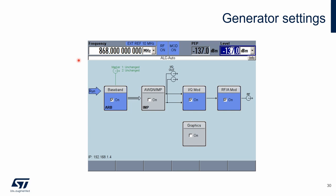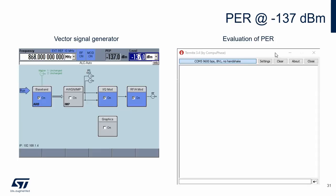Here is a brief description of the generator settings used in the example. The frequency is 868 MHz. We set the output power level in the range from minus 137 to minus 139 dBm, which is around the value we want to verify. This displayed value is quite exact, and we will use it in the calculation as the real transmitted power. The LoRa test signal is generated in the internal arbitrary waveform generator; this baseband signal is then modulated to the carrier and transmitted to the tested device. I start the test from minus 137 dBm and configure the tested board by sending the configuration command, then start receiving and evaluating the packet error rate.